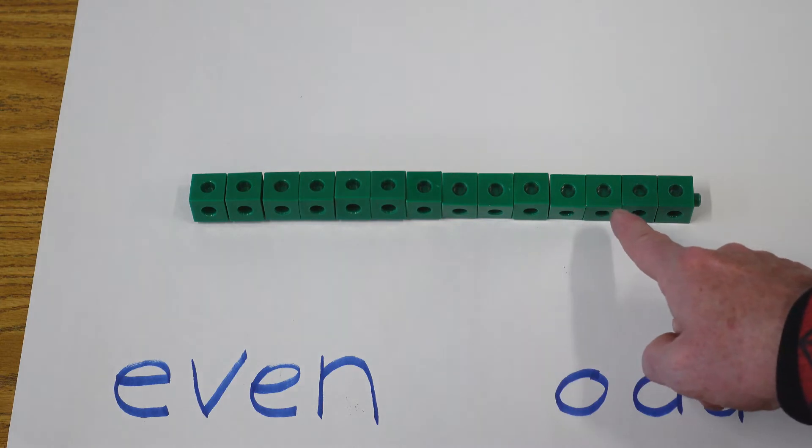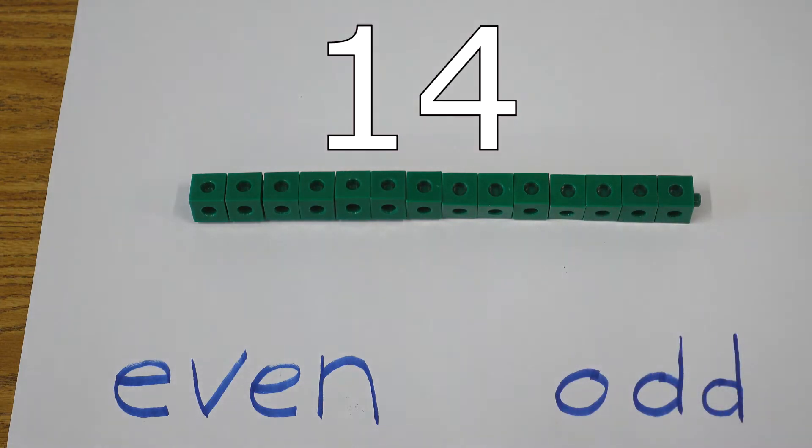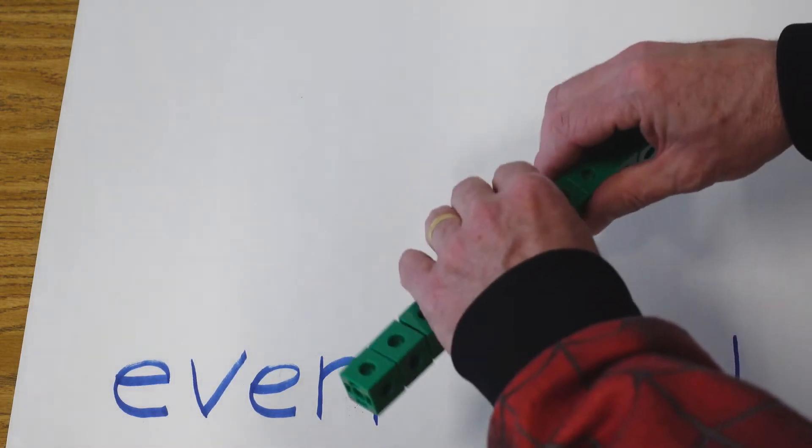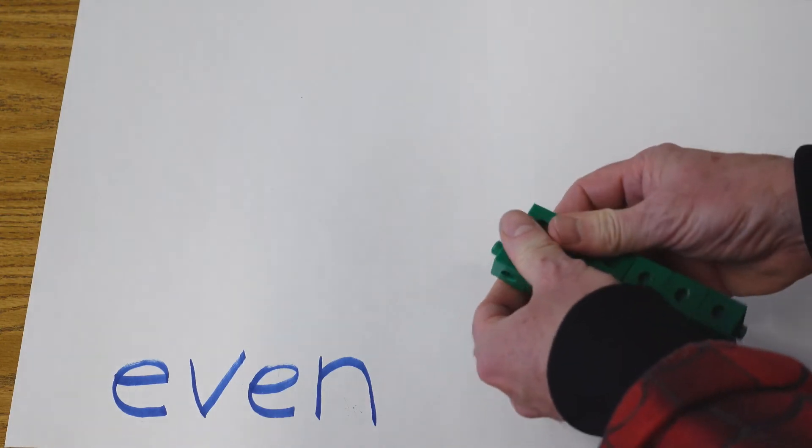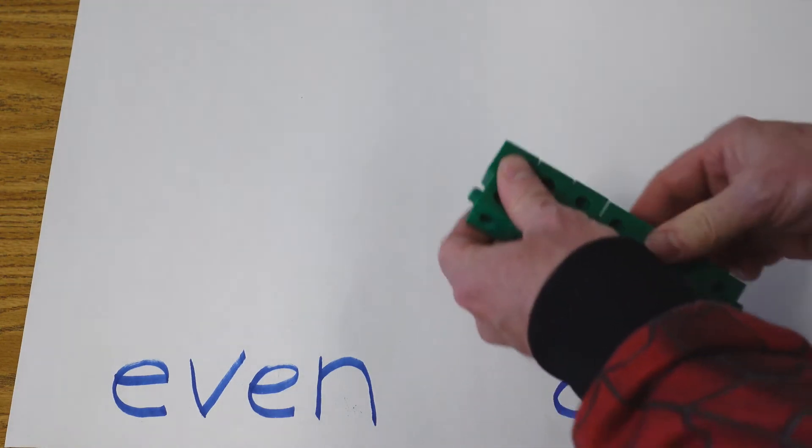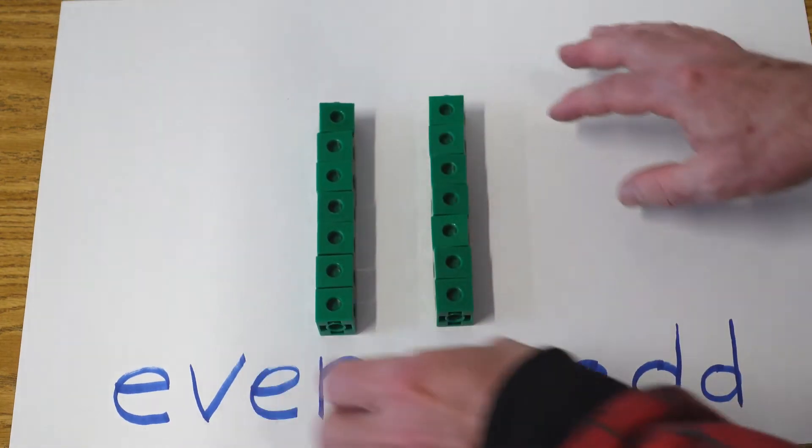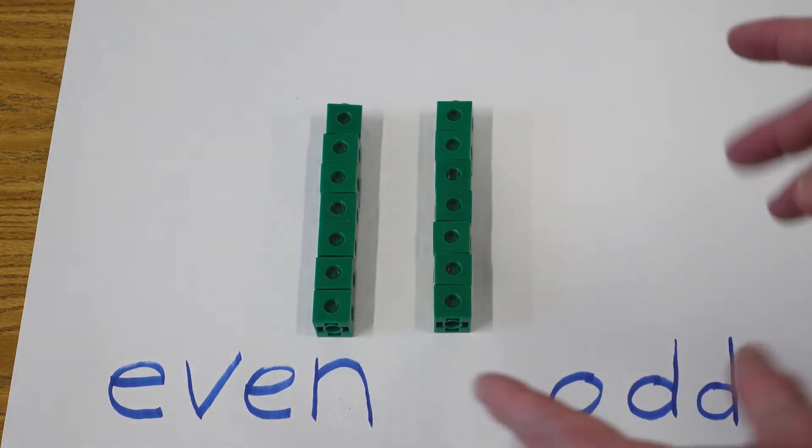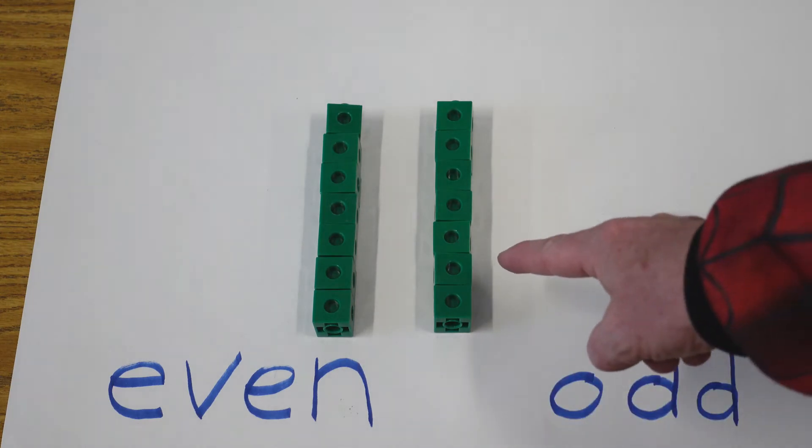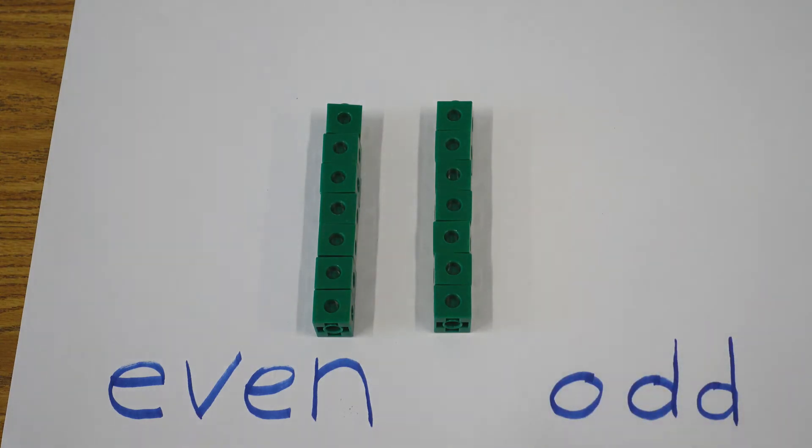10, 11, 12, 13, 14. Is 14 an even or odd number? You're correct. 14 is an even number. Let's split these apart here. Oops, we had one fall there. And you can see that they are in equal sides. There's 7 on this side and 7 on this side. So that makes it even.